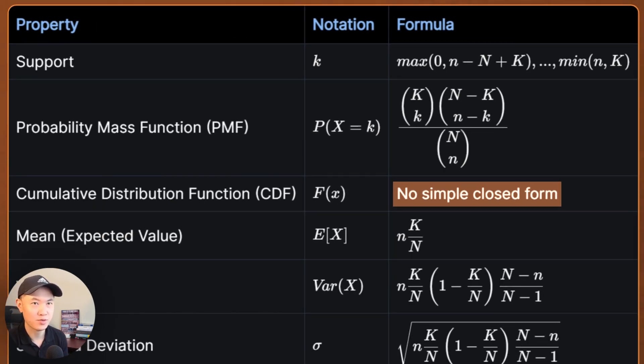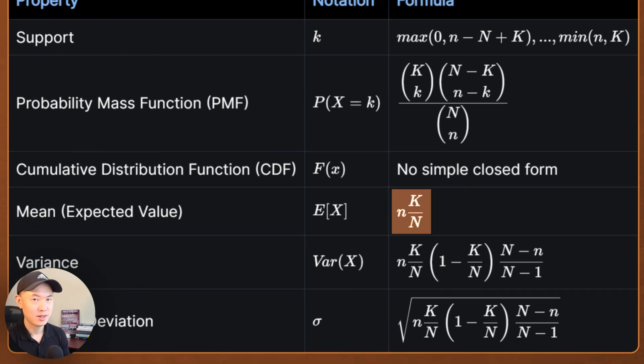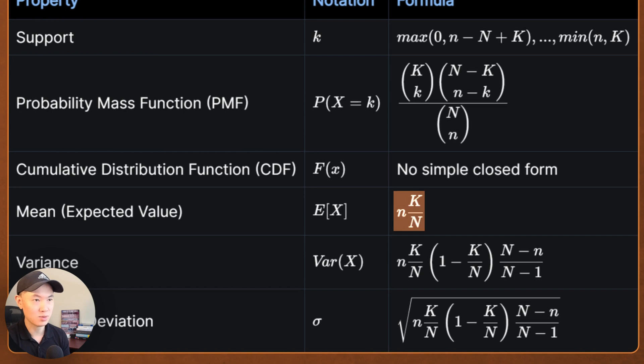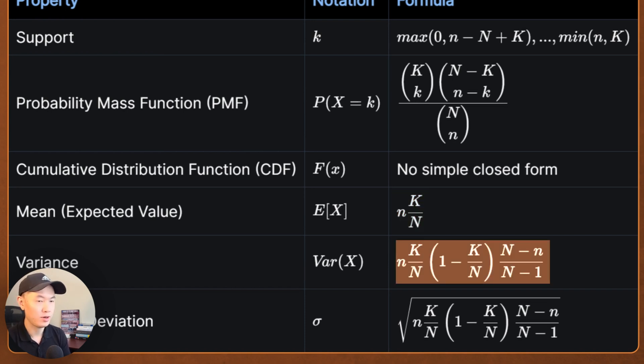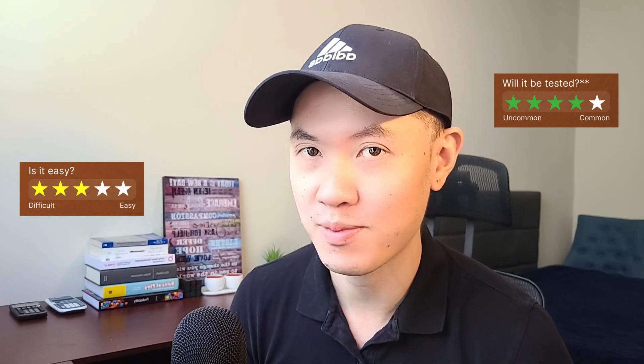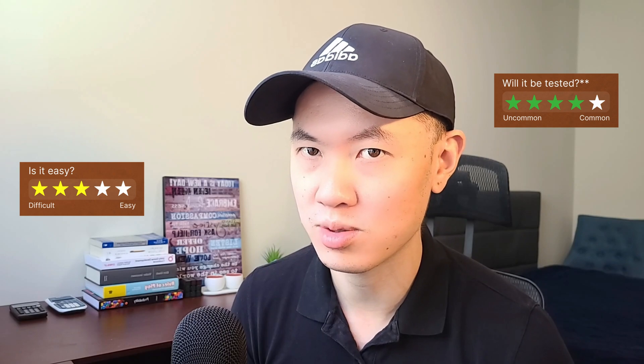There's no simple closed form solution for the CDF. Once you understand how the distribution works, the expected value makes sense: it's basically the probability of successes in your population — uppercase K divided by uppercase N — multiplied by your sample size, giving you the expected number of successes in your sample. The variance formula is a little more involved; I'd leave that as one of the last things to memorize. Is it easy? I'd give this a 3 out of 5, leaning toward 2.5. If you have a good understanding of combinations from learning objective 1, it'll be easier to pick up. Will it be tested? This gets a 4 out of 5, as the concepts overlap with learning objective 1.